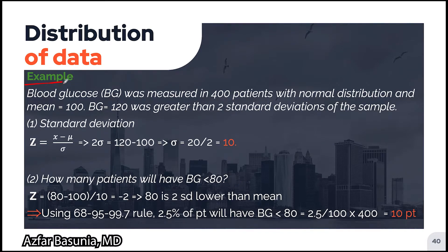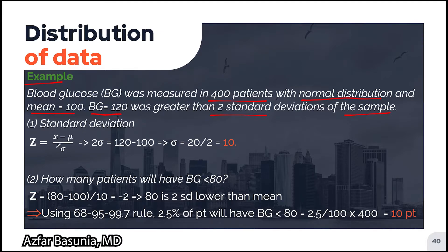Let us run through a quick example. Suppose we have blood glucose measurements from 400 patients with a normal distribution and a mean of around 100. A blood glucose of 120 was greater than two standard deviations of the sample. Using the z-score formula, if we plug in z = 2, x = 120, and mean = 100, and solve for sigma, we get that sigma is equal to 10.